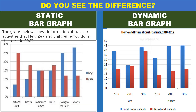Now let's check again the difference between static and dynamic so that you don't get confused when writing in the exam. In the static graph on your left, you see there's only one time frame, which is the year 2007. But when you look at the dynamic graph, it is between 2010 and 2012 — from one time period to another. The first step in writing the graph is to check the time frame and decide if it is dynamic or static.